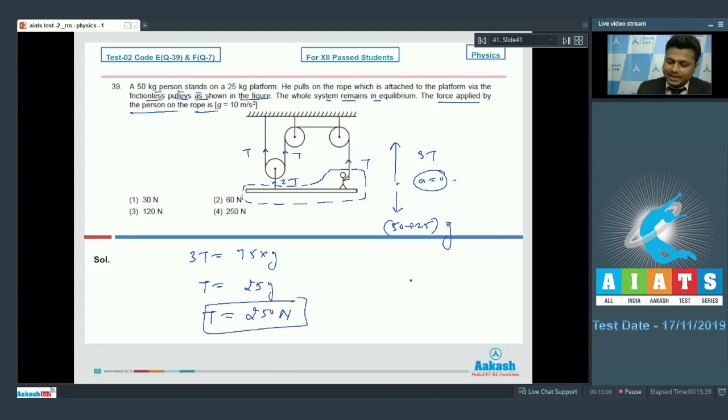So this is the force applied by the person on the rope, that is simply t. So we will go with option number 4.